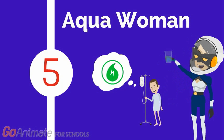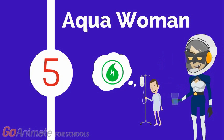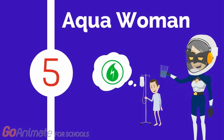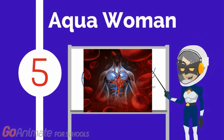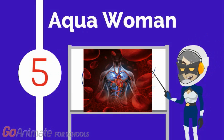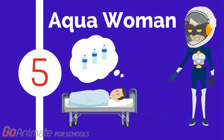Meet Sepsis 5, aka the Aqua Woman. Sepsis 5 involves giving more fluid to patients. Fluid replacement is necessary in ensuring that the blood is being delivered to the tissues and it prevents hypotension, or low blood pressure. A common symptom of sepsis is significant dehydration, and so high levels of fluid resuscitation are usually needed.